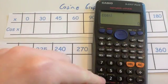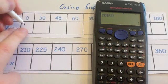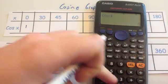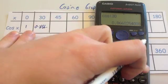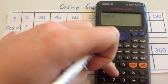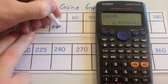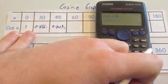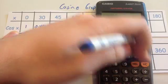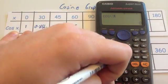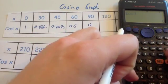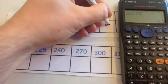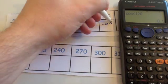So the cos of 0 is 1. The cos of 30 is 0.866. The cos of 45 is 0.707. The cos of 60, I know this one, is equal to 0.5. The cos of 90 is equal to 0. The cos of 120 is equal to minus 0.5. Do you notice the pattern here? I'm going to carry on and work out the rest now.